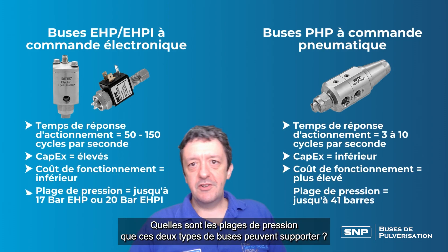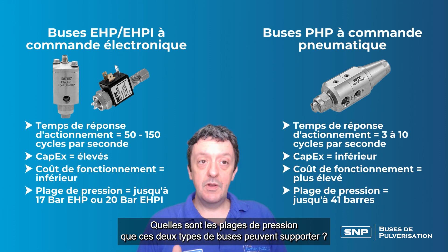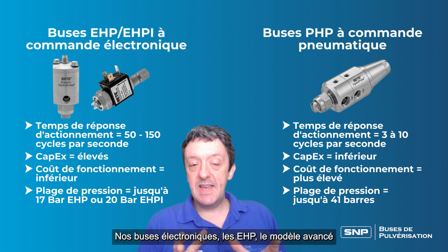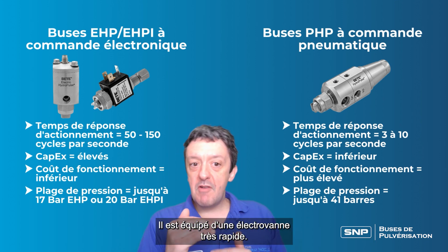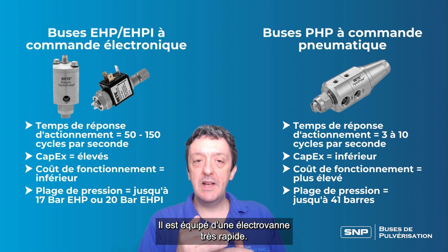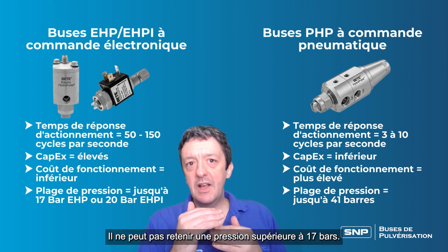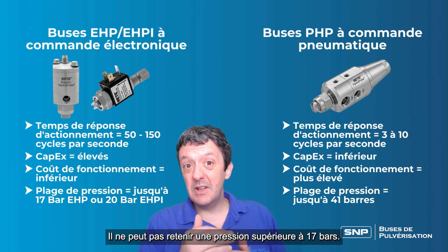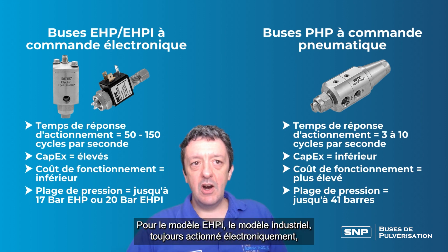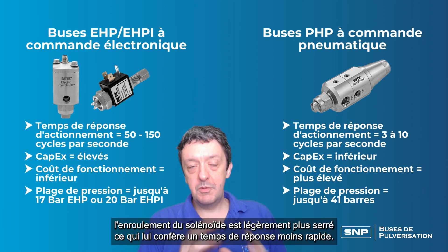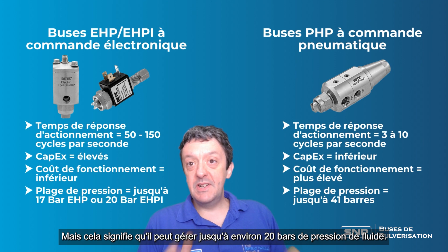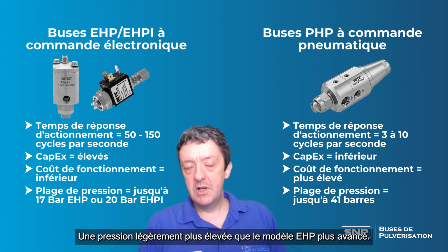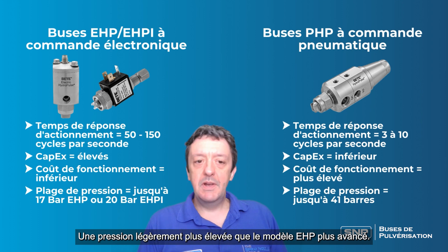Next, let's look at the pressure range — what pressure ranges can these two types of nozzles cope with? Our electronic nozzles, the EHP advanced model, can cope with up to about 17 bar of fluid pressure, with a very rapidly responding solenoid valve. The EHPI, with a less rapid response time, can actually handle up to about 20 bar of fluid pressure, so it's slightly higher pressure than the more advanced EHP model.